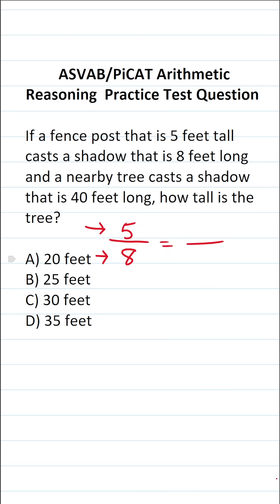We know the tree casts a shadow that is 40 feet long, so we're going to put that in the denominator, and its height's unknown, so we'll use the letter variable x to represent that.